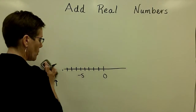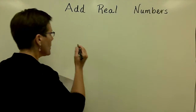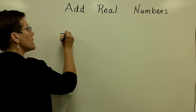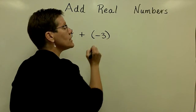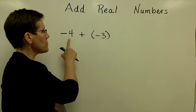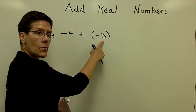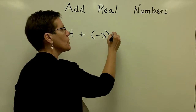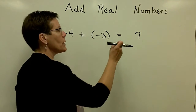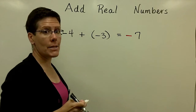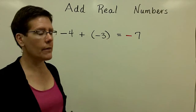Another example of a problem like this — very, very similar, no number line. Let's just go ahead and see if we can remember the principle. If I have a negative 4 and I want to add a negative 3 to that, the absolute value of that is 4, the absolute value of this is 3, for a total of 7, and I'm going to apply the common sign of those two numbers. I'm at a negative 7.